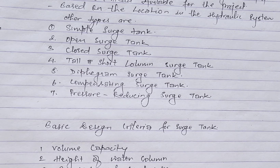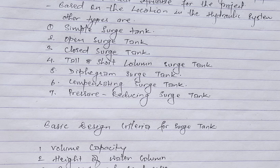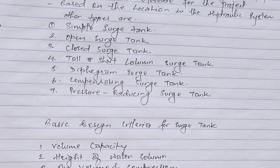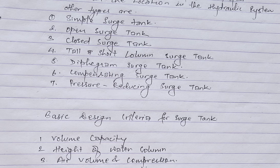The next criterion is height of the water column: tall columns are suitable for systems with high vertical heads, while shorter columns may be adequate for systems with low heads. Next is air volume and compression calculation: the air volume in the source tank must be calculated to ensure adequate accommodation of pressure changes, considering the compressibility of air and designing the tank to accommodate variations in air volume without causing excessive pressure fluctuations.